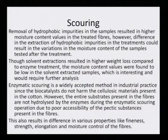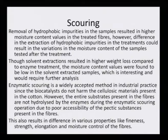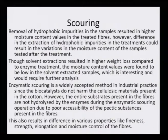Enzymatic scouring is a widely accepted method in industrial practice, since the biocatalysts do not harm the cellulosic material present in cotton. However, the entire substrate present in the fibers is not hydrolyzed by the enzymes during enzymatic scouring due to poor accessibility of the pectic substances present in the fibers. This results in variation in various properties like fineness, strength, elongation, and moisture content of the fibers. Even that process is not foolproof, but it is to a large extent acceptable, because it removes a lot of impurities.